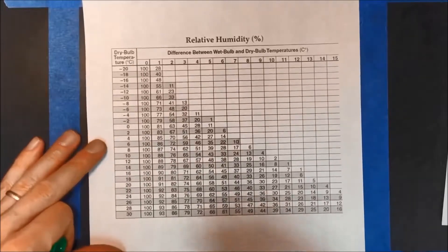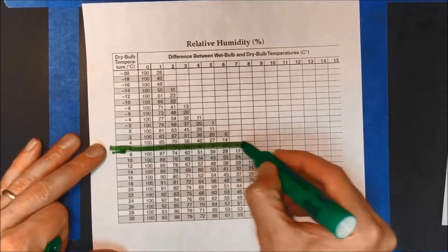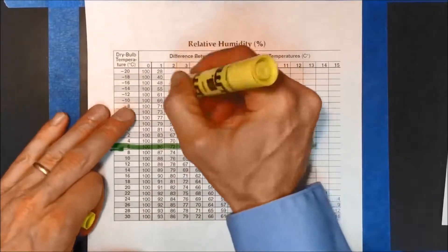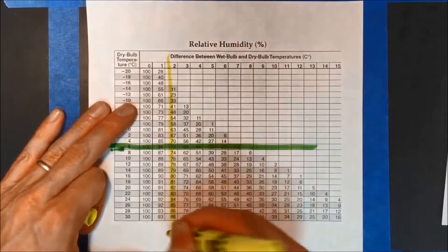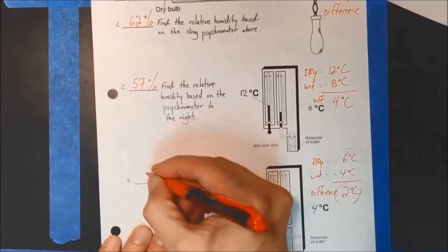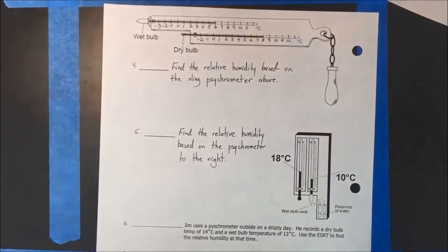What did I say? Dry bulb, this is a dry bulb of 6. And a difference of 2. Now it's 2, now we're in the 2 column. So here where they meet 72%, the relative humidity of this is 72%. So hopefully you got the hang of it. We'll do a few more on the back.